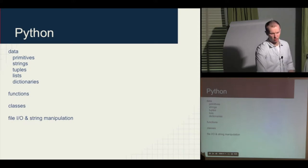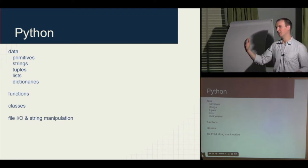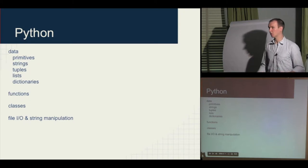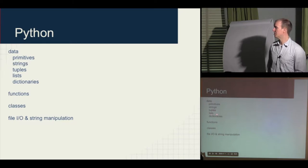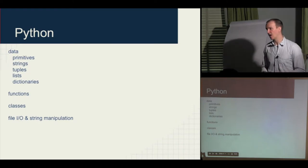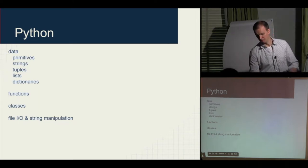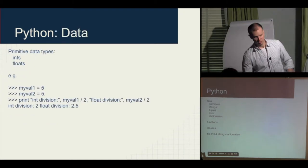What am I going to talk about in this lecture? I'm going to go over the language features of Python — starting with data representation. I'll talk about primitives, strings (Python's a great language for dealing with strings, way better than C++), the tuple data type, lists and dictionaries. Between lists and dictionaries you can do lots of stuff. I'll talk about functions, the syntax for declaring classes — not going too deep into classes — and for the lab, file manipulation and string manipulation.